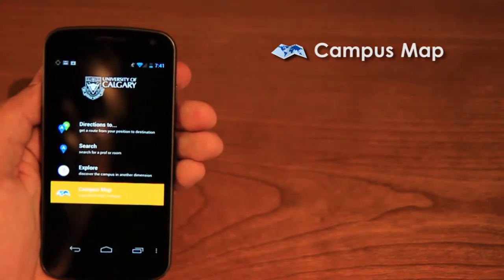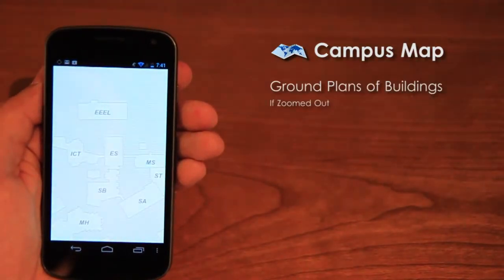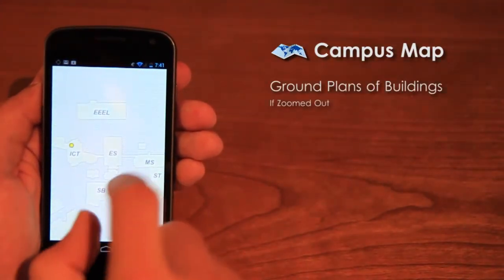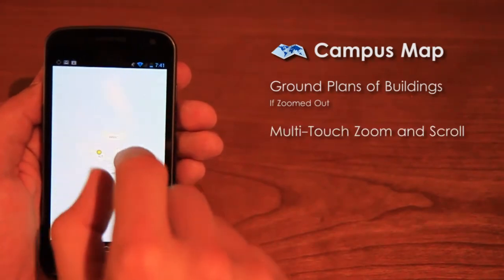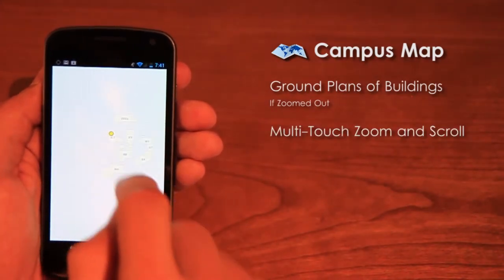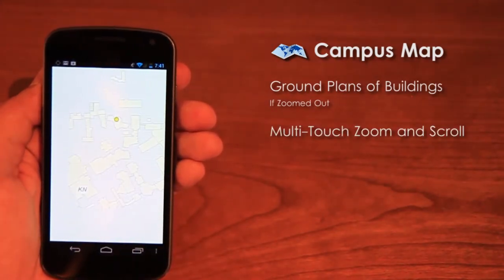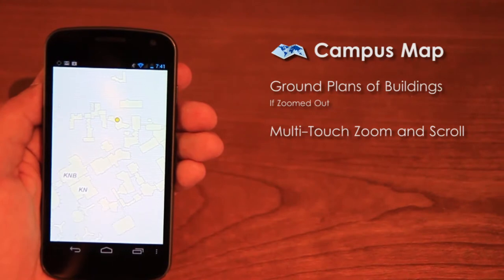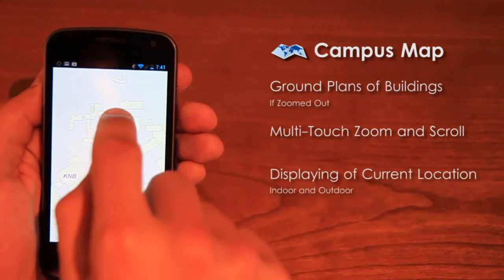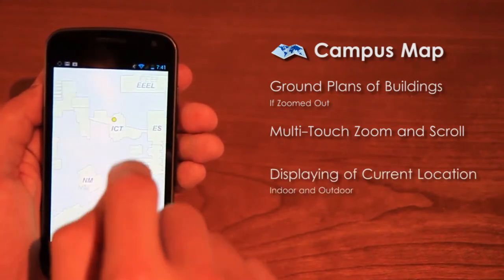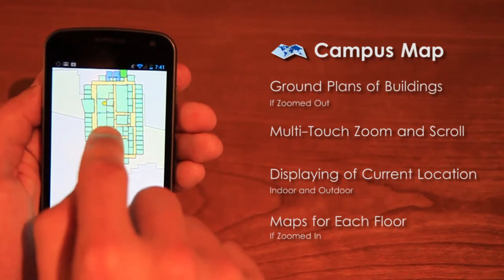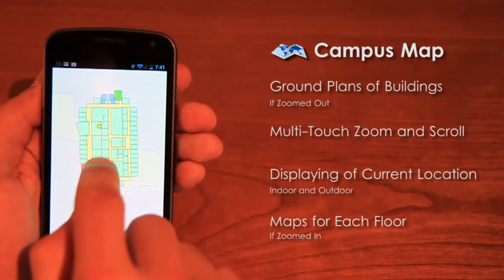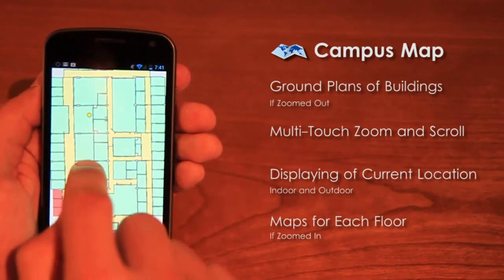The campus map is the basic feature of this application. It shows indoor as well as outdoor maps of the campus. The position of the user is displayed by a dot on the map — yellow for indoor, blue for outdoor positions.